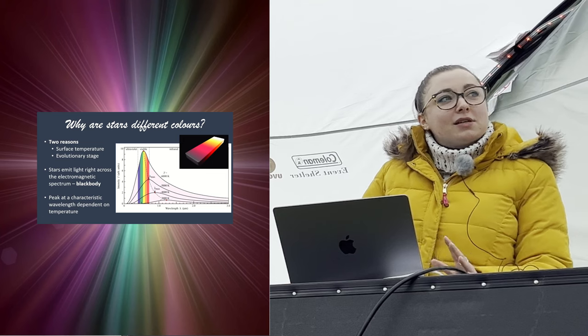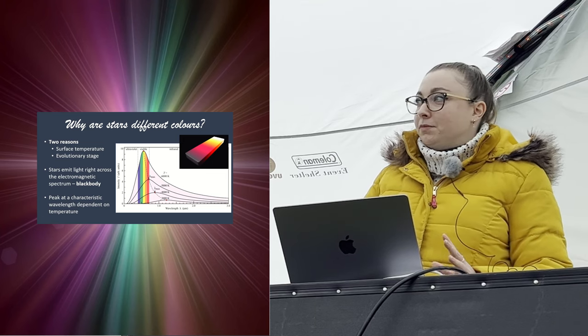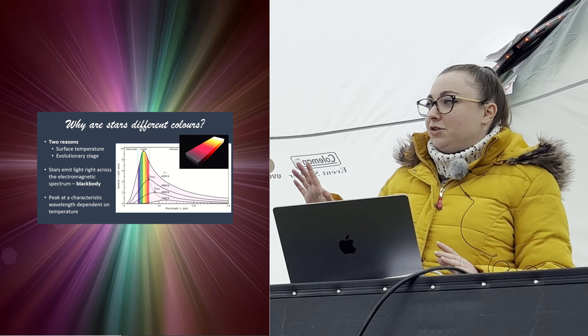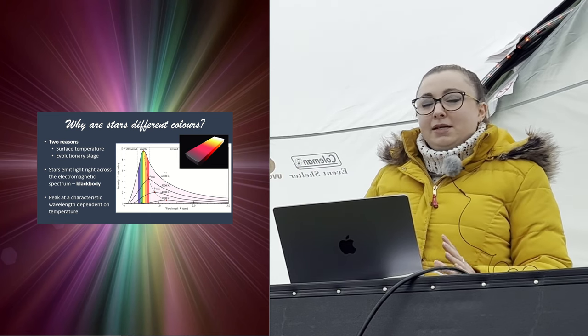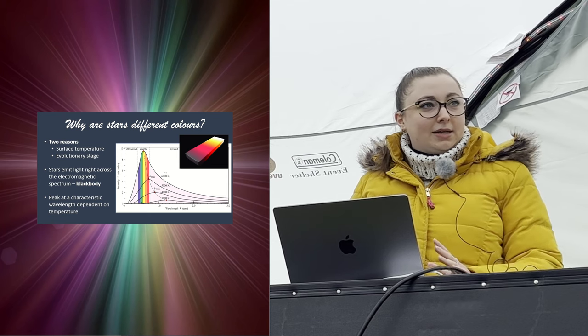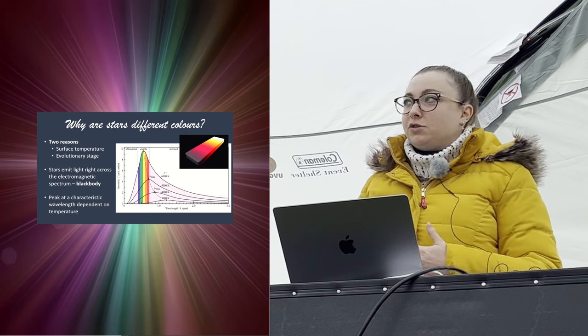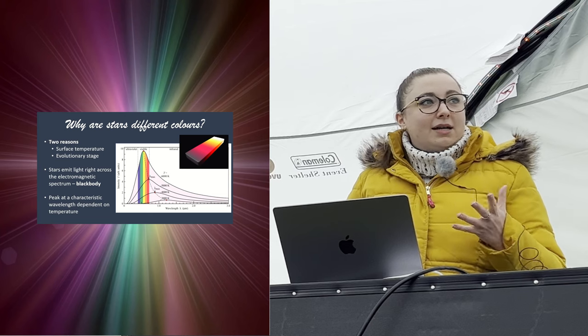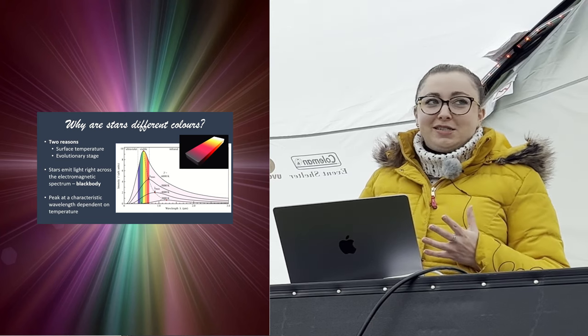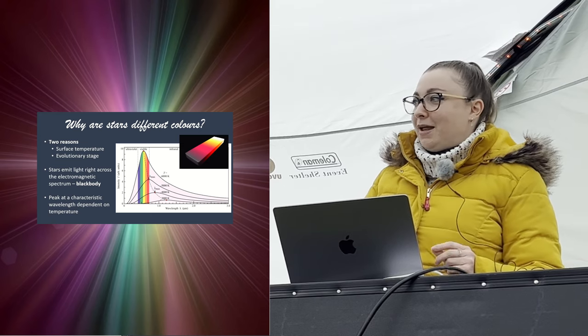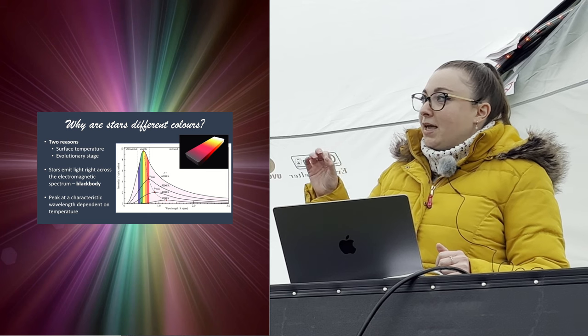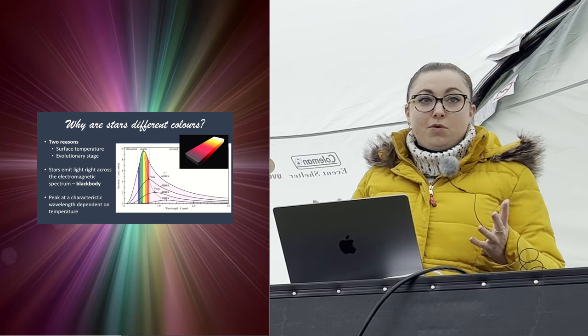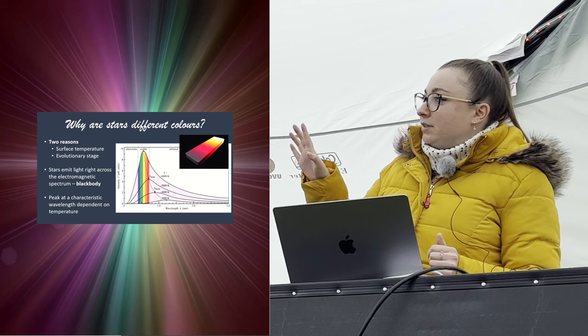The reason that stars have different colors boils down to two things: surface temperature and evolutionary stage. Stars emit light right across the electromagnetic spectrum, so it's not just light that we can see with our eyes. They also emit infrared light, radio waves, ultraviolet. They emit light as a black body, and black bodies are very interesting objects. The key point of a black body is that their peak wavelength of emission is entirely dictated by their temperature. It doesn't matter what they're made of.